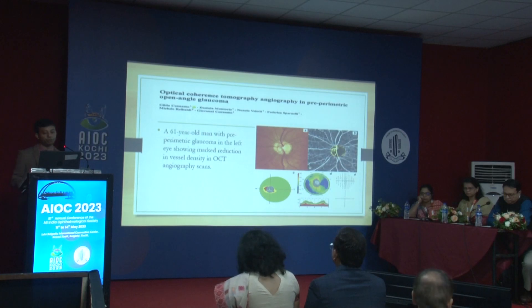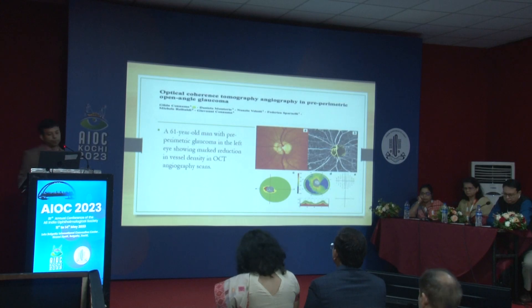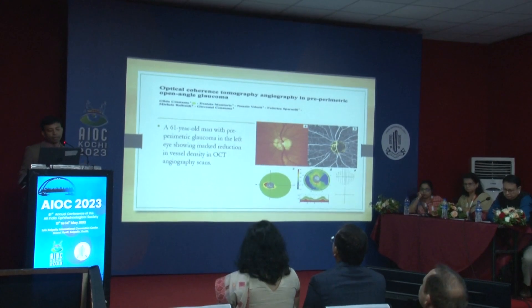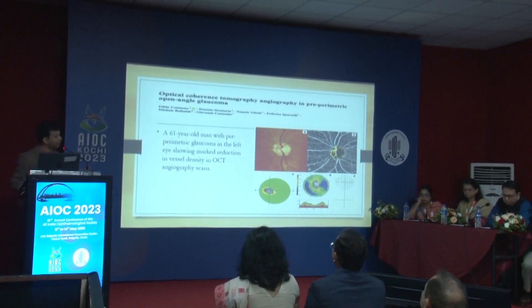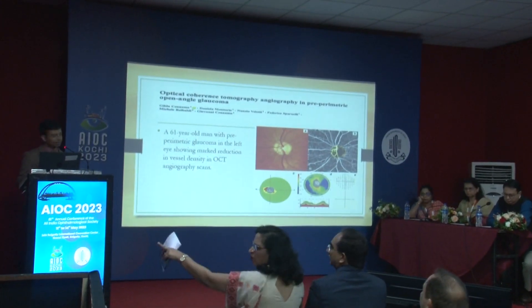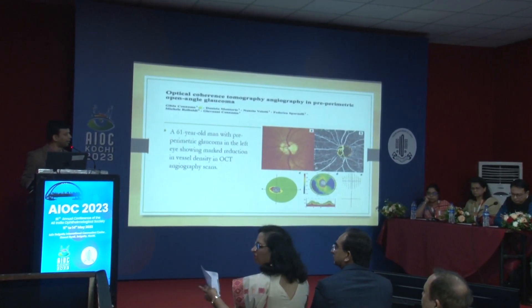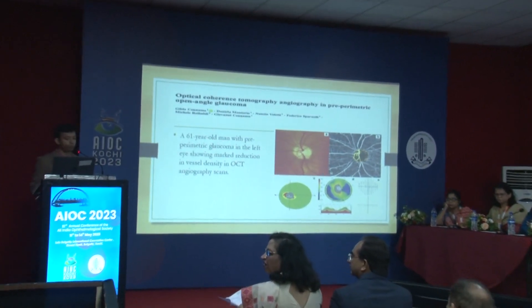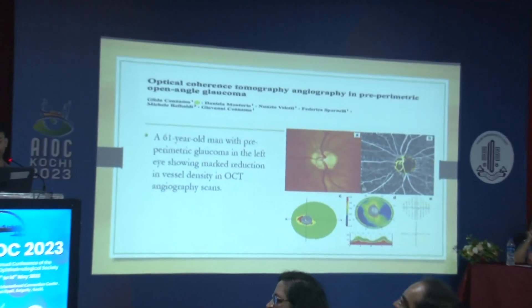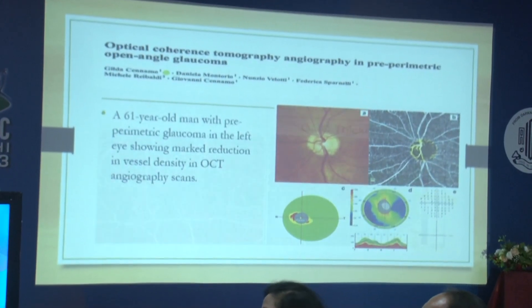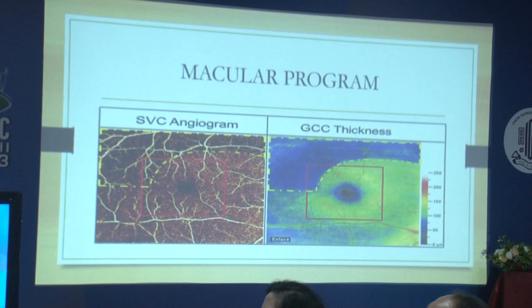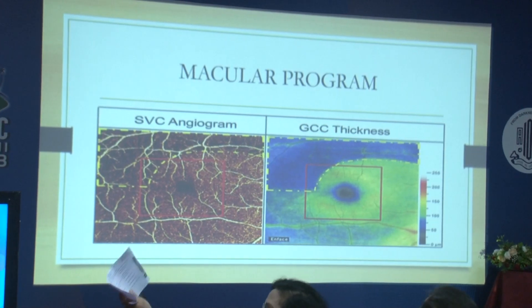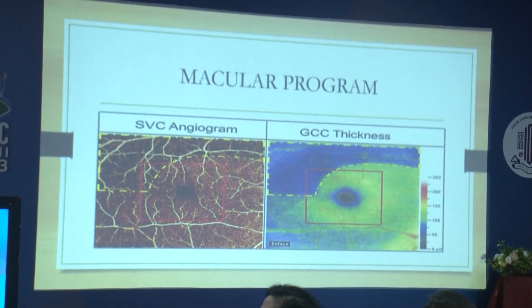We are also very interested in pre-perimetric glaucoma with these imaging modalities. A paper by Kenema et al. showed that in a 61-year-old patient with a disc cup-to-disc ratio around 0.7, where the AGF was absolutely normal, the OCT angiography was already picking up reduced vascular density.